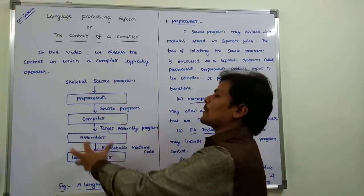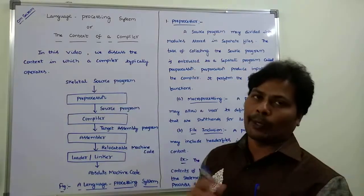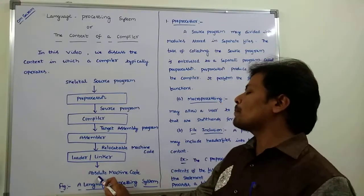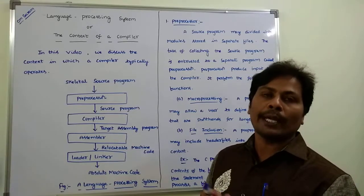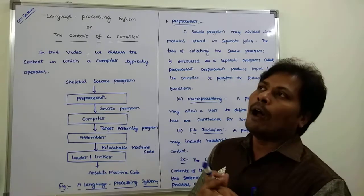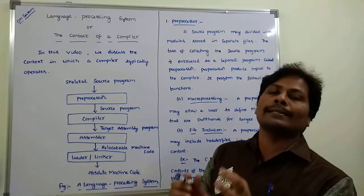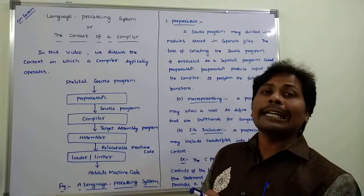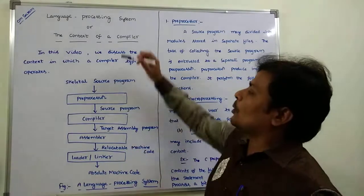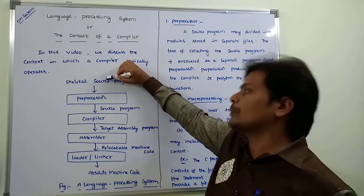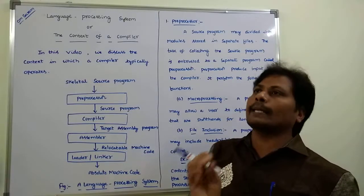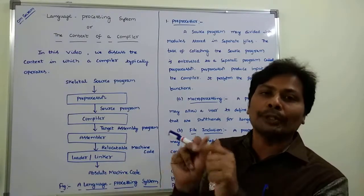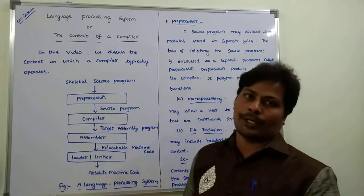The input for the language processing system is a skeletal source program, and the output is absolute machine code. The skeletal source program is input to the pre-processor, which produces the source program as output.